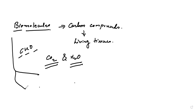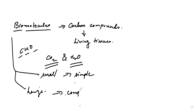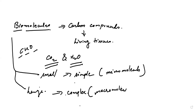Biomolecules are further divided according to how much they are present or how much is required — that is, small and large. Small will have a very simple structure, whereas if it's large, they will have a little complex structure. Small is also termed as micromolecules, and the large ones are macromolecules. Let's first see about the micromolecules — that is, biomicromolecules.